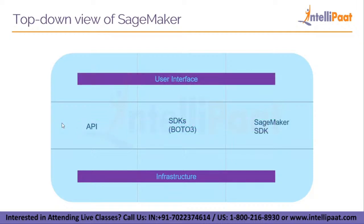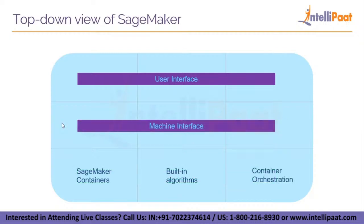Taking a step back and looking at the machine interface and infrastructure layers: in the machine interface layer, we have APIs used to connect endpoints, and SDKs — Boto3 in particular for Python programming — as well as the SageMaker SDK for pre-built common business solutions. In the infrastructure layer, we have SageMaker containers managed by AWS to integrate into the SageMaker environment. We also have containers with built-in algorithms, such as CNN (Convolutional Neural Network) for image classification, and many other algorithms with common business use cases.